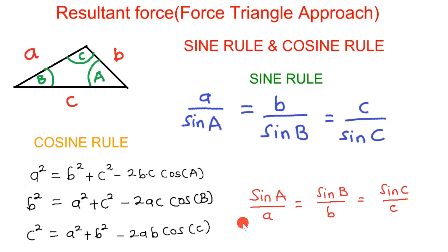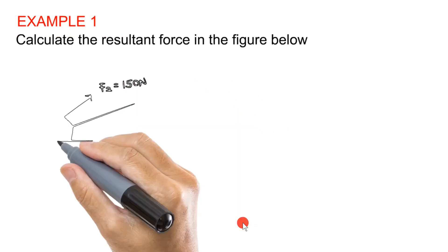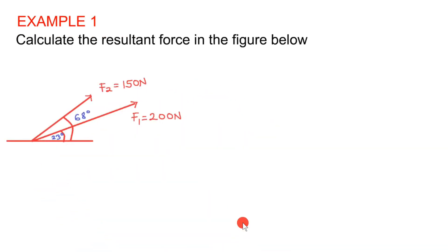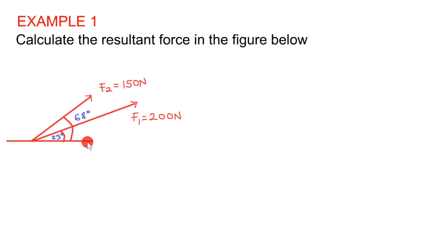With that knowledge, let's go ahead and take an example. We need to calculate the resultant force from the figure. There are two forces, F1 and F2, with magnitudes of 200 newtons and 150 newtons respectively. F1 makes an angle of 23 degrees and F2 makes an angle of 68 degrees with the horizontal line.